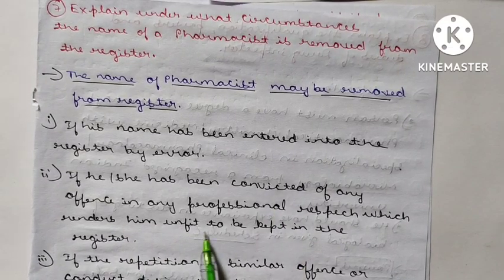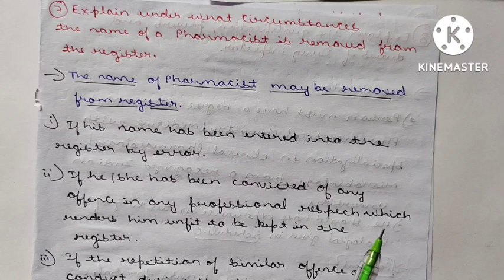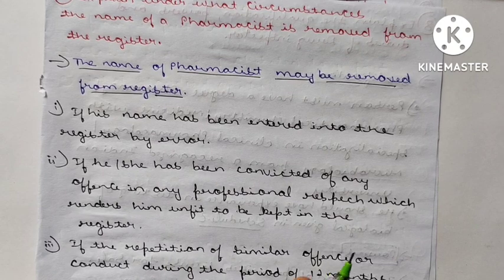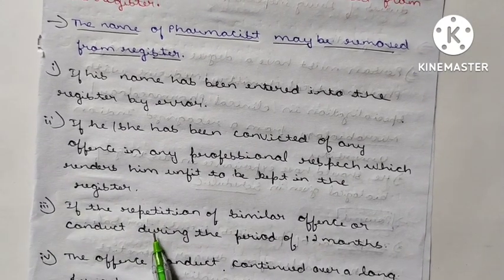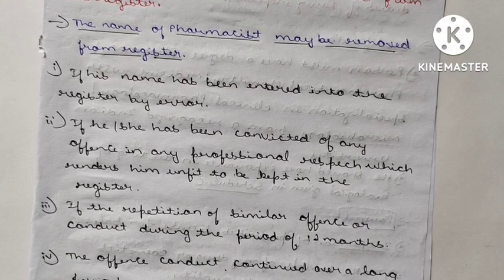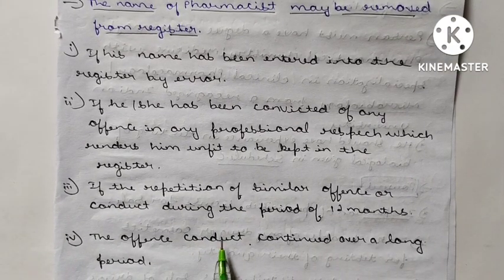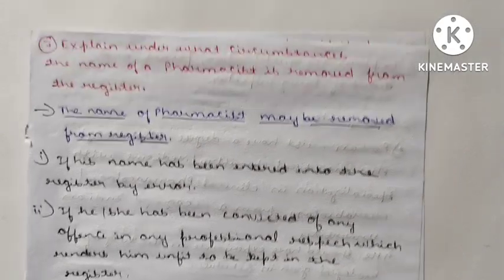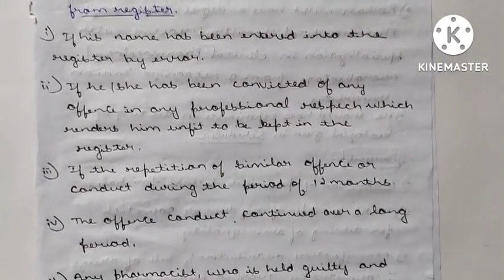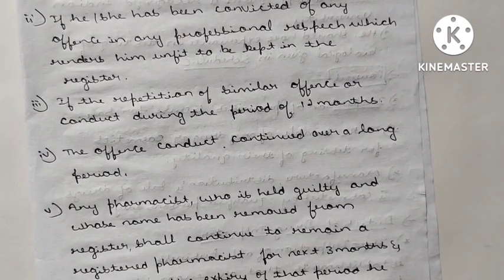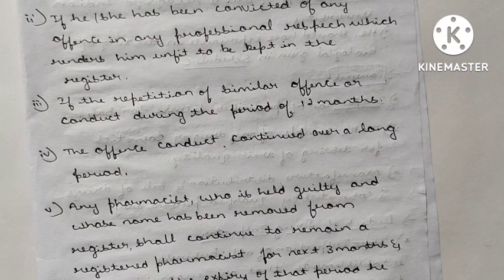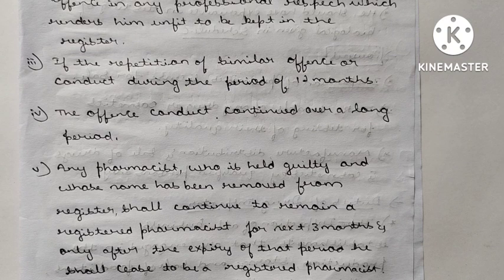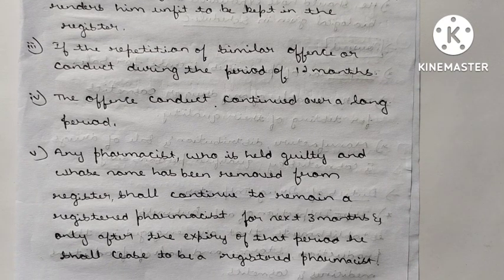The pharmacist may also be removed if he or she has been convicted of any offense in any professional respect which renders him unfit to be kept in the register — for example, illegal activities. If the repetition of a similar offense or conduct continues during a period of 12 months, or the offense conduct continues over a long period, this also leads to removal. Any pharmacist found guilty whose name has been removed shall continue to remain a registered pharmacist for the next three months only.